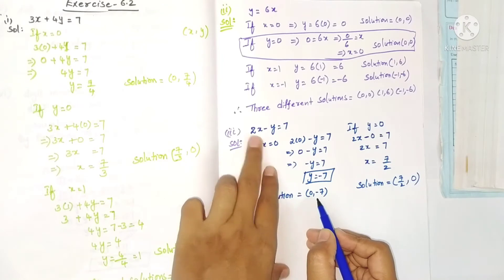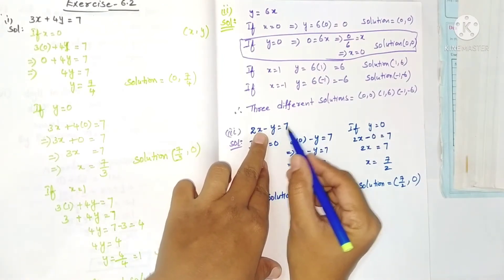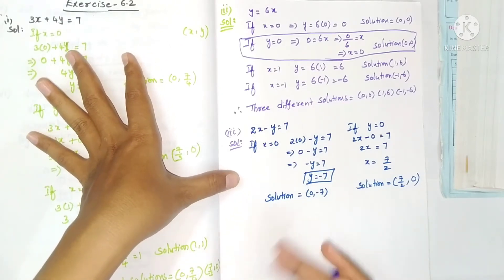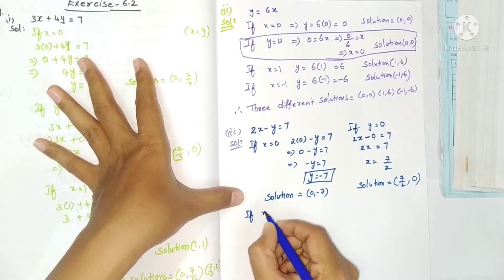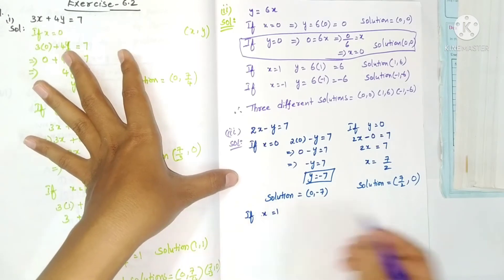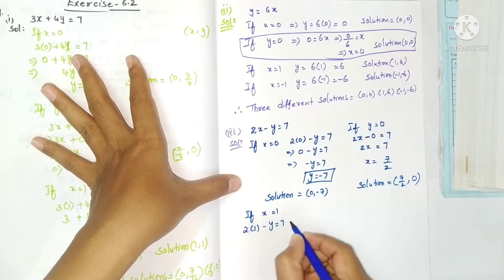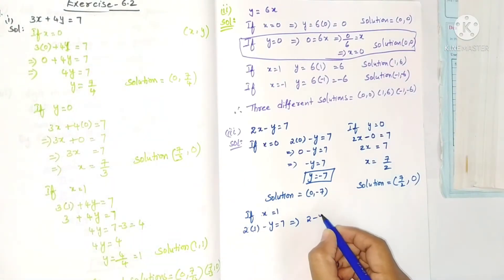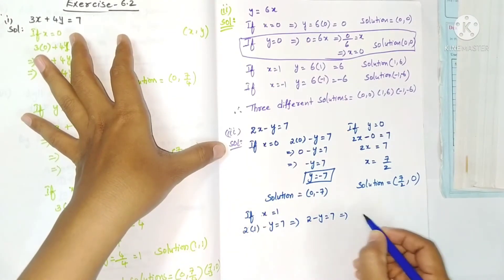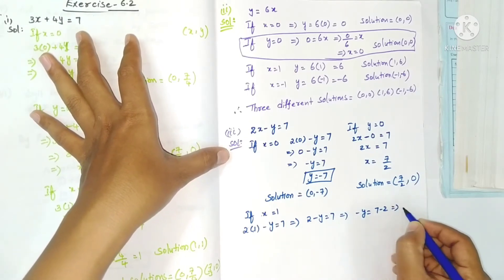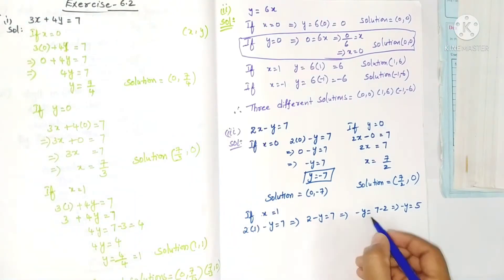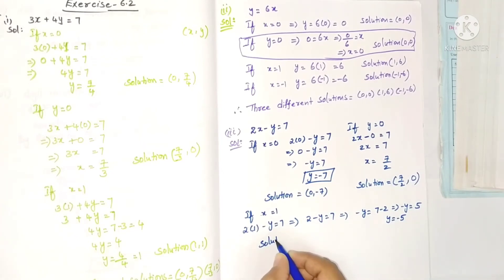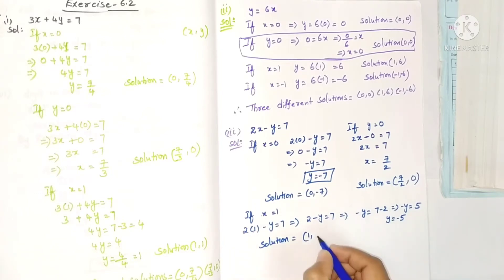You can verify: substituting x = 0 and y = minus 7, minus into minus gives plus 7, so LHS equals 7 equals RHS. For the third solution, take x = 1: 2 into 1 minus y equals 7, so 2 minus y equals 7. Transposing: minus y equals 7 minus 2 = 5, so y equals minus 5. Third solution is (1, -5).